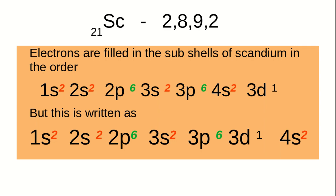The electronic configuration of scandium is 2-8-9-2. How can we write its subshell electronic configuration? Based on filling order (4S before 3D): 1S2, 2S2, 2P6, 3S2, 3P6, 4S2, and 3D1.